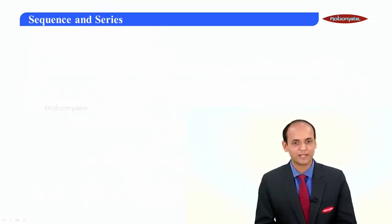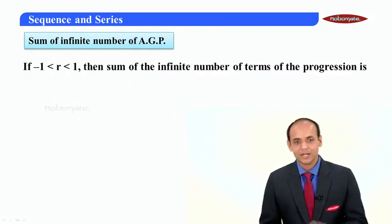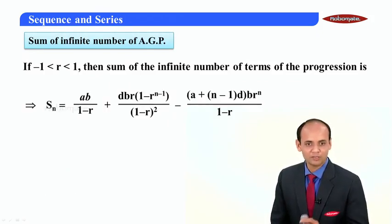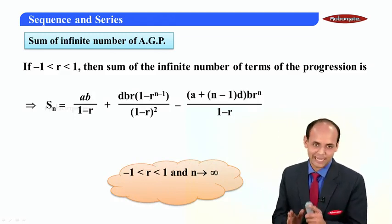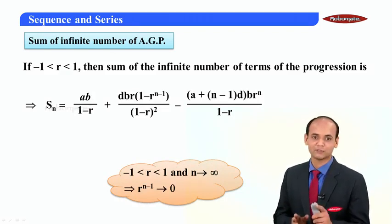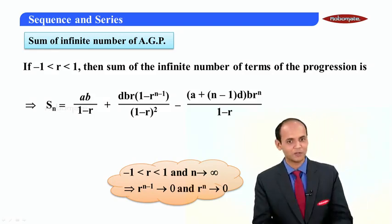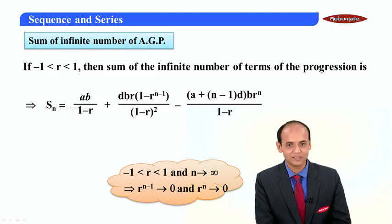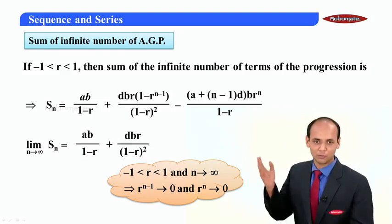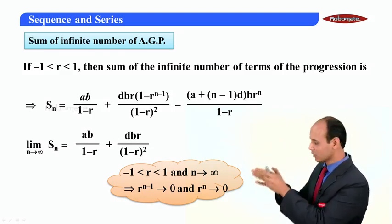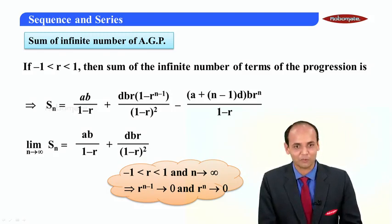Let us now find the sum of infinite terms in AGP. If the common ratio R is between −1 and 1 and the number of terms is infinite, then R^(n−1) and R^n both tend towards 0. Using these results in the above expression, the last two terms cancel out and give 0. Hence, the sum of infinite terms is obtained as AB/(1−R) + DBR/(1−R)².